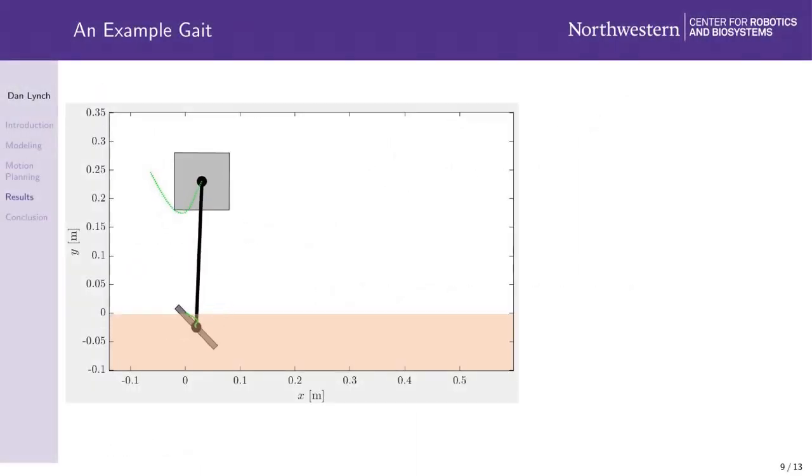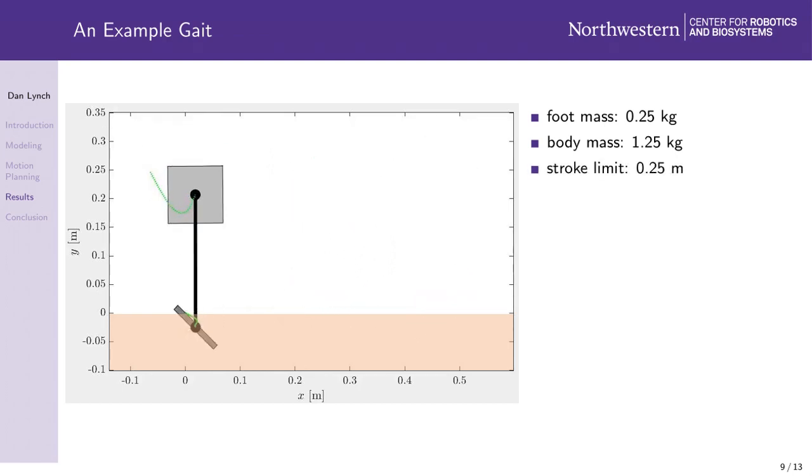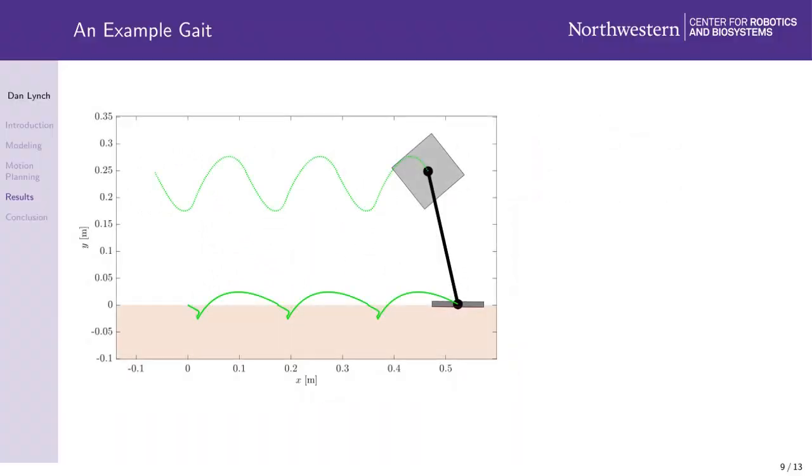After we put together all the pieces, we see that our framework can indeed find hopping gaits. In this example, the foot mass is 0.25 kilograms and the body is 5 times heavier at 1.25 kilograms. The stroke limit is set at 0.25 meters and I'm requiring the robot to hop forward at 2 stroke lengths per second.